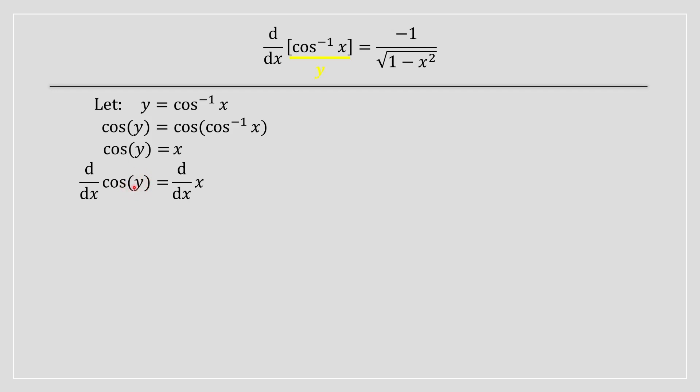Notice cos of y in this case, y is a function. So therefore we got a function within a function. We're going to have to apply the chain rule. So this here is going to be the derivative of the first part and then whatever's inside the brackets, which is dy/dx.